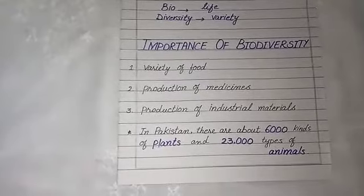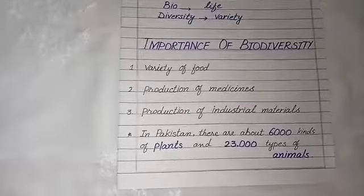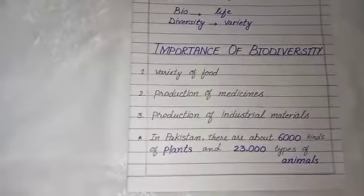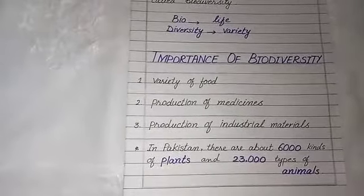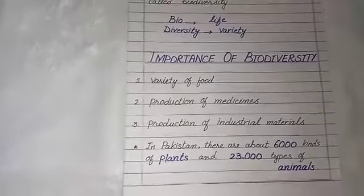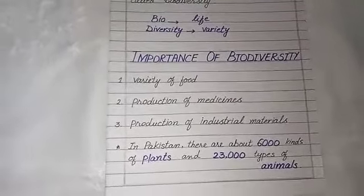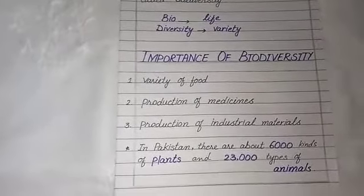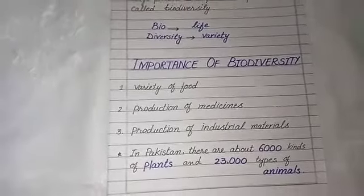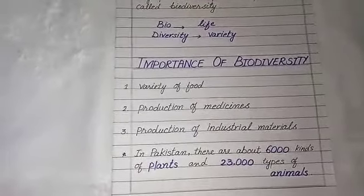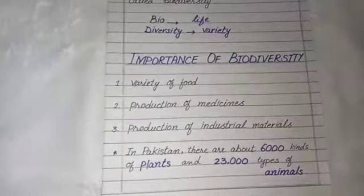The second important point is the production of medicines. When you are sick — whether you have a fever, chest infection, or body pain — you can use medicines. These medicines are made from different types of plants and other types of animals, using different types of materials which are used in medicines.